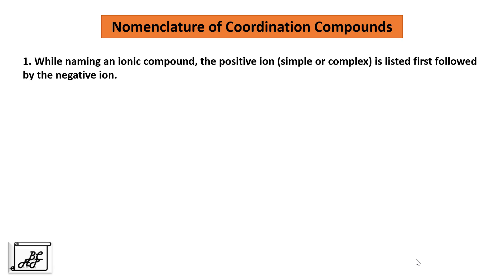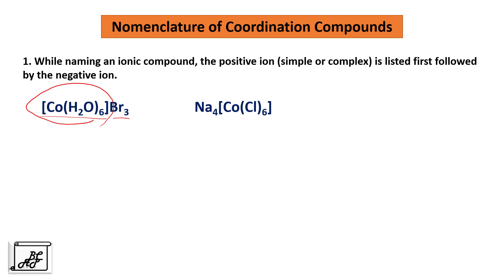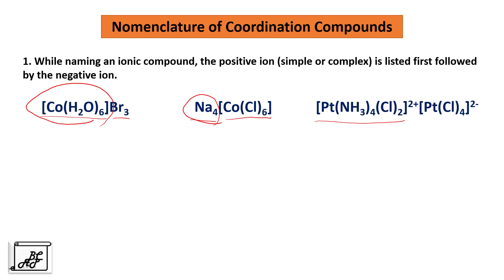The first rule is: while naming an ionic compound, the positive ion — it may be simple or complex — is listed first, followed by the negative ion. For example, in the case of cobalt hexaaquabromide, the positive ion is named first. In the second example, sodium ion is the first part and cobalt hexachloride is the second part. In the third example, platinum tetraamminedichloride is the positive ion and tetrachloroplatinate is the negative part — the positive ion is named first.